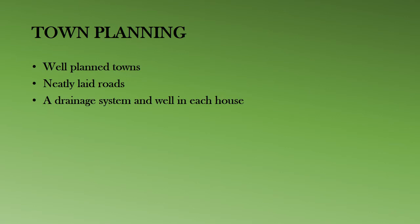The next topic is town planning. The towns were well planned with neatly laid roads and drains. Each house had a drainage system with slopes to carry dirty water to the city's main drain, which was covered. Each house also had a well, apart from the common wells in the city, so people did not have to go far to collect water.